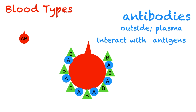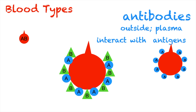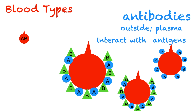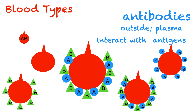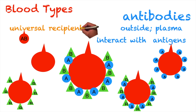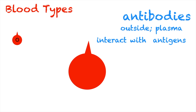Next is type AB blood. Remember, always the opposite. So if both A and B antigens are present on the surface of the red blood cell, the opposite means there will be no antibodies floating around in the plasma. So if you get type A, type B, type AB, or type O blood, no reaction will take place for a patient with AB blood type because there are no antibodies. This is why a person with type AB blood is considered to be the universal recipient — meaning they can receive any blood type: type A, type AB, type B, or type O.